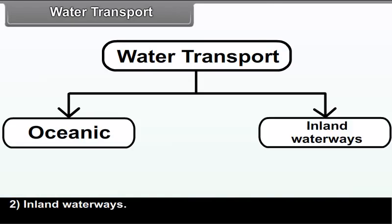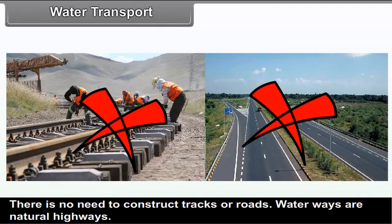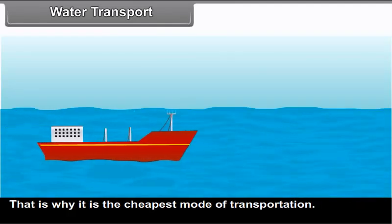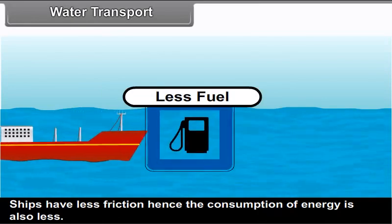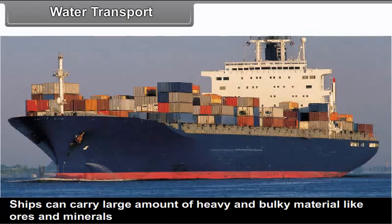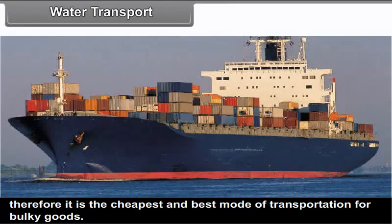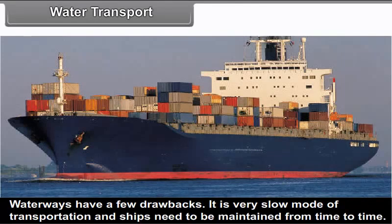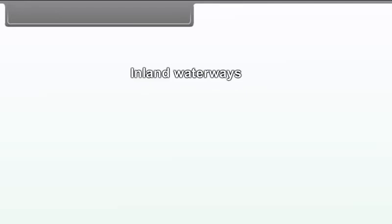Water transport is an important mode of transportation. There are two types of waterways: oceanic and inland waterways. Advantages of waterways: there is no need to construct tracks or roads — waterways are natural highways, making it the cheapest mode of transportation. Ships have less friction, so energy consumption is also less. Ships can carry large amounts of heavy and bulky material like ores and minerals, making it the cheapest and best mode for bulky goods.